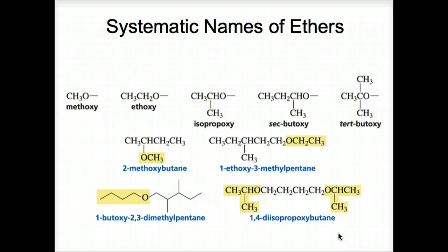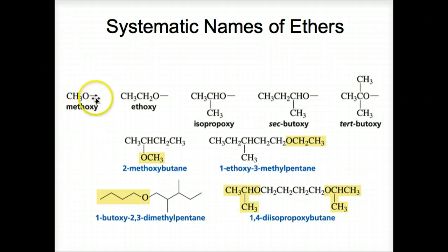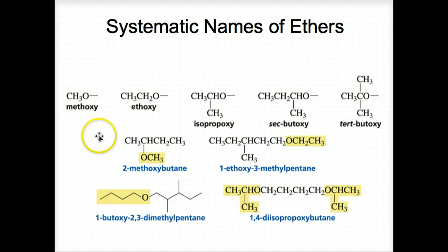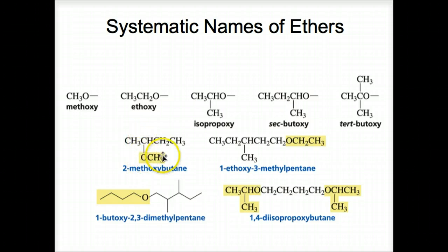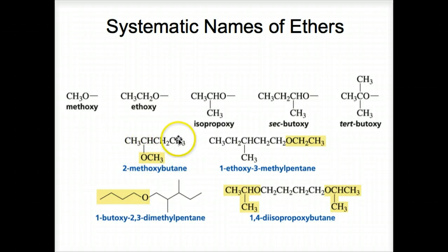Here are additional examples of systematic naming of ethers, with a new term: a methyl group attached to an oxygen is called methoxy; an ethyl group attached to an oxygen is called ethoxy. These names allow us a more convenient way to name ethers as substituents on a carbon chain. For example, when we see an oxygen with a methyl group, we recognize it as methoxy — it's a substituent on a four-carbon chain from number two, so we call it 2-methoxybutane.